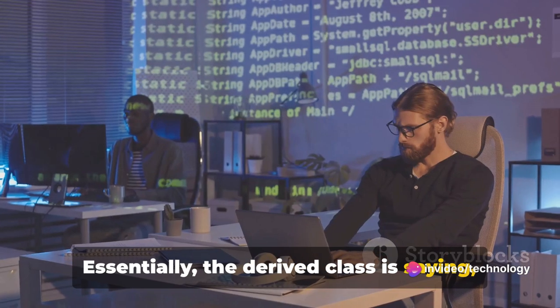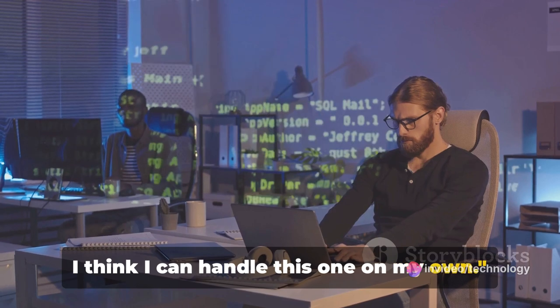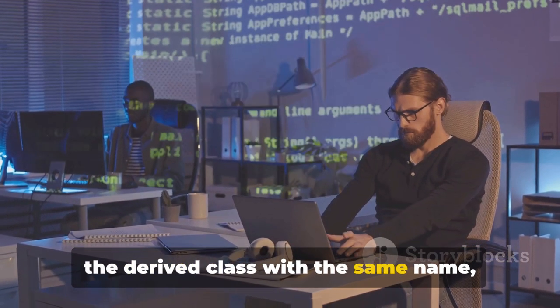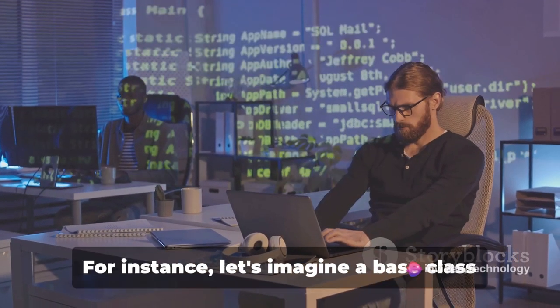This is when a derived class provides a new implementation for a function that is already defined in its base class. Essentially, the derived class is saying, thanks for the function base class, but I think I can handle this one on my own. This is done by declaring a function in the derived class with the same name, return type, and parameters as the one in the base class.